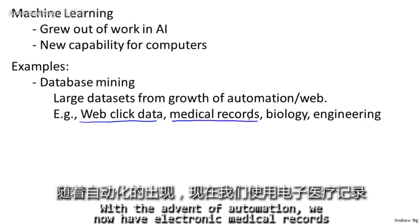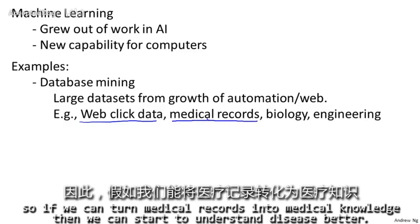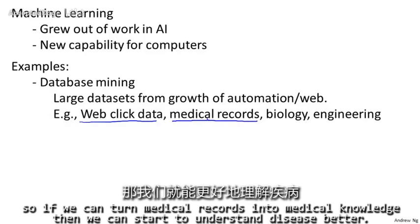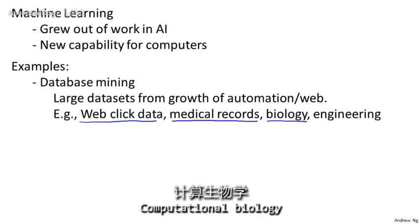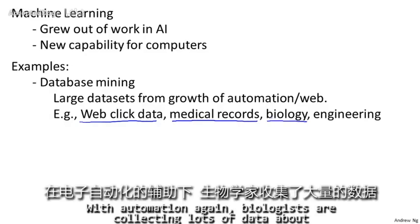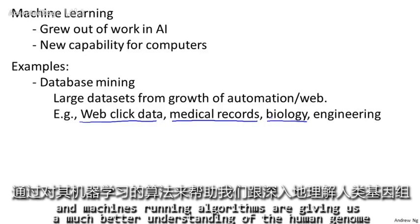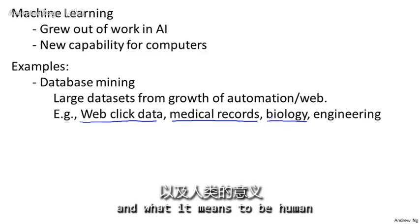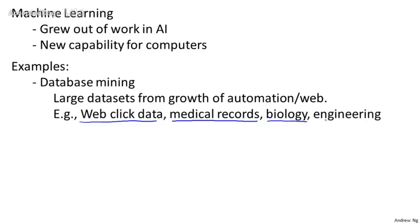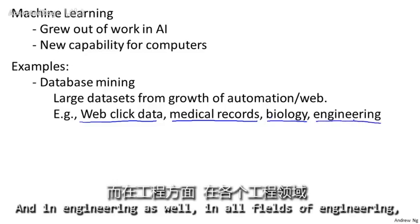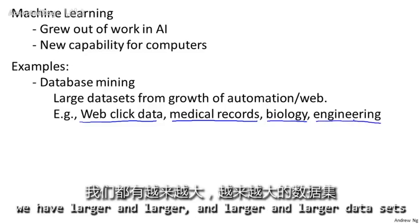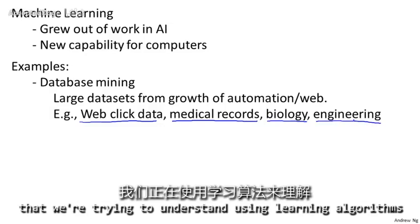Medical records: with the advent of automation, we now have electronic medical records, so if we can turn medical records into medical knowledge, then we can start to understand disease better. Computational biology: with automation, biologists are collecting lots of data about gene sequences, DNA sequences, and so on, and machine learning algorithms are giving us a much better understanding of the human genome and what it means to be human. And in engineering as well, in all fields of engineering, we have larger and larger data sets that we're trying to understand using learning algorithms.